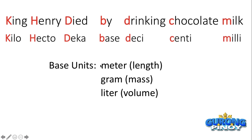You can apply the prefixes to any base unit. For length: kilometer (km), hectometer (hm), decameter (Dm), meter, decimeter (dm), centimeter (cm), millimeter (mm). Note: Deca uses a capital D while Deci uses a small d. For mass: kilogram, hectogram, decagram, and so on. For volume: kiloliter, hectoliter, decaliter, liter, deciliter, centiliter, and milliliter.